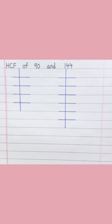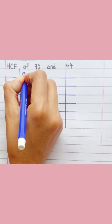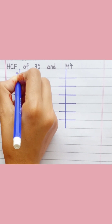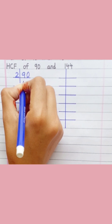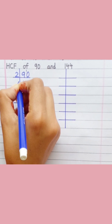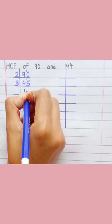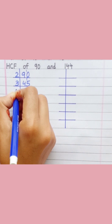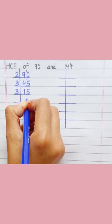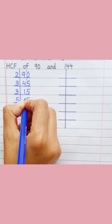HCF of 90 and 144. Starting with 90: 2 fours are 8, 2 fives are 10, 3 ones are 3, 3 fives are 15, 5 ones are 5.